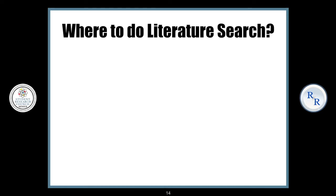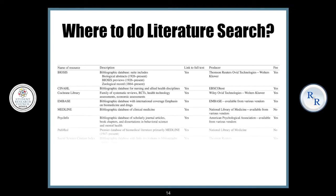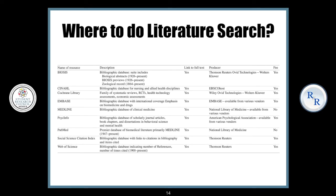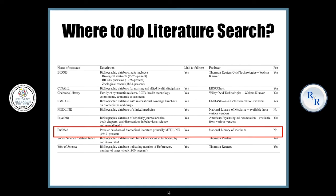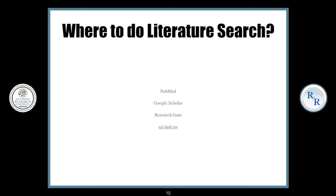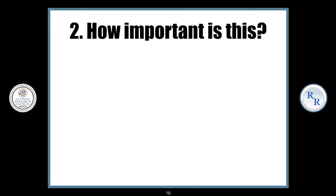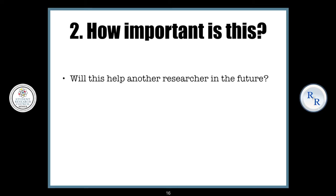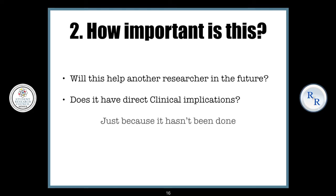Where do you do this literature search? There is a long list of sources, but I personally prefer PubMed. Other sources for UG students are Google Scholar, ResearchGate, and Sci-Hub, which has open access to all publications. The second question you need to ask yourself is: how important is this research question? Will this help another researcher in the future? Does it have direct clinical implications? Because you need to understand that just because it hasn't been done yet doesn't mean that it needs to be done or is necessary.